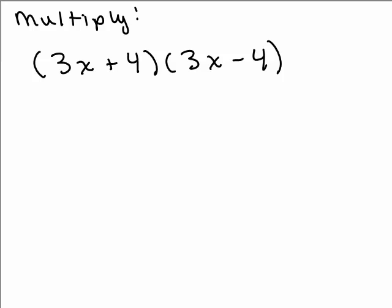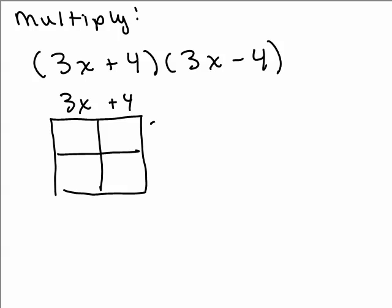So here's a problem: multiply (3x + 4)(3x - 4). Let's go ahead and use the box method. We didn't do that yet. So we could write 3x + 4, 3x - 4, and let's fill in the box. 3x times 3x is 9x². 4 times 3x is +12x. 4 times -4 is -16, and 3x times -4 is -12x.